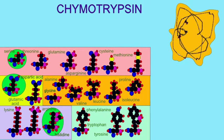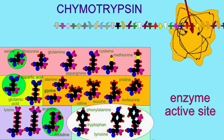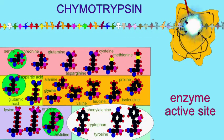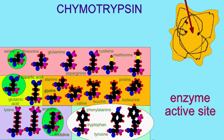The structure of the active site of chymotrypsin allows it to break the peptide bonds between some of the larger amino acids, such as tyrosine, tryptophan, and phenylalanine.